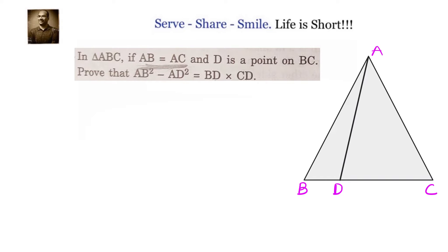How to solve this problem? First we see that AB squared and AD squared, so we have to somehow find out the squares of these sides. That means we need to use Pythagoras theorem. And also we know AB equals AC, so we have an isosceles triangle.